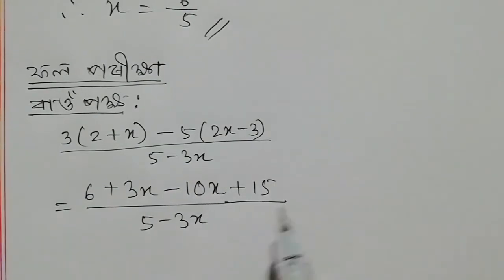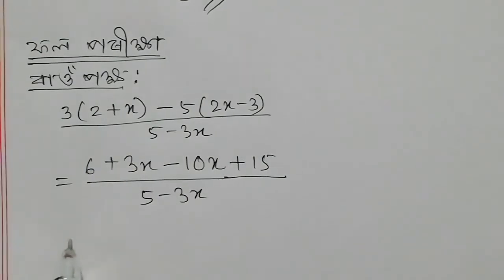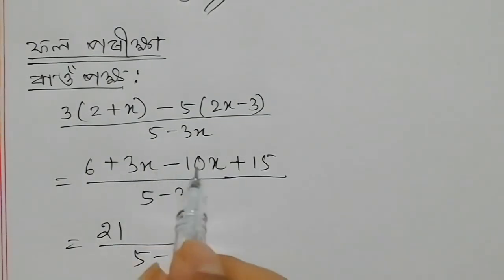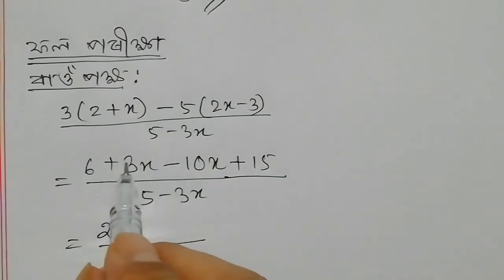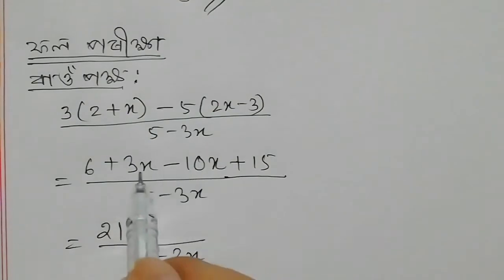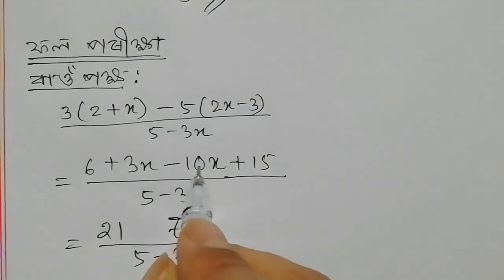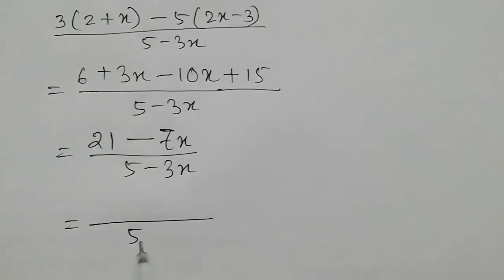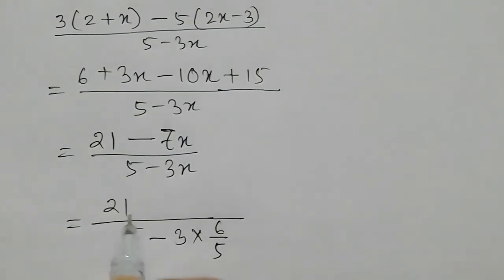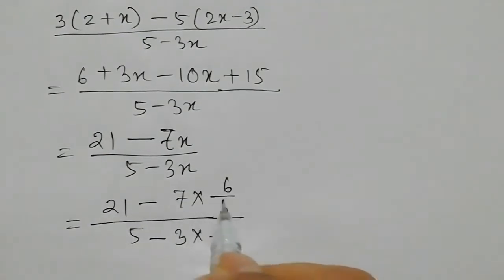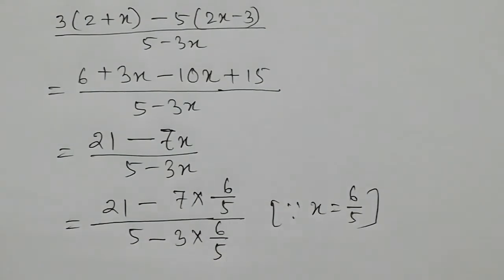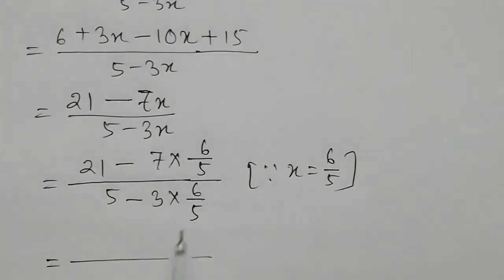So x: 5 minus 3x equals 6 plus 15, equals 21. x equals: 3x equals 10x minus 3x equals 7x. 10x equals 21 minus 7x. 5 minus 3 into x equals 1 plus 6 by 5. 6 by 5 plus this one is 21 minus 7 into 6 by 5, since x equals 6 by 5. So x is equal to 6 by 5. Plus this one is 21 minus 7 into 6 by 5.